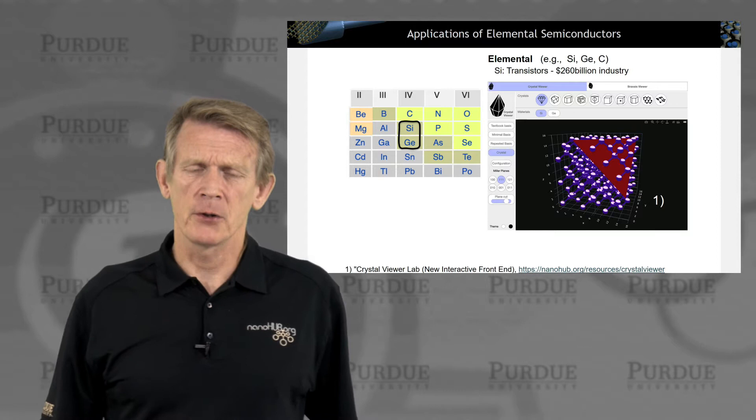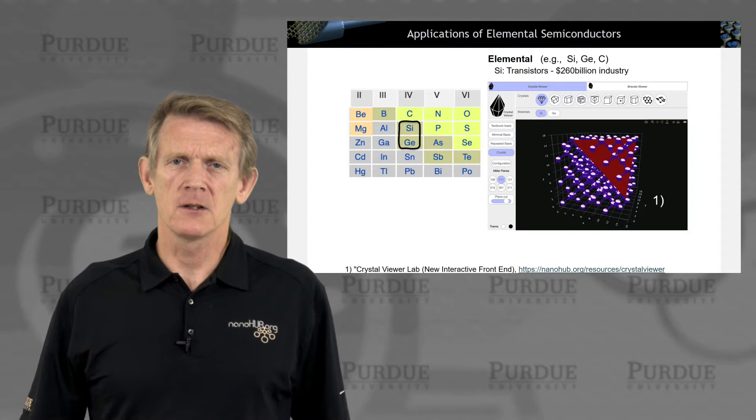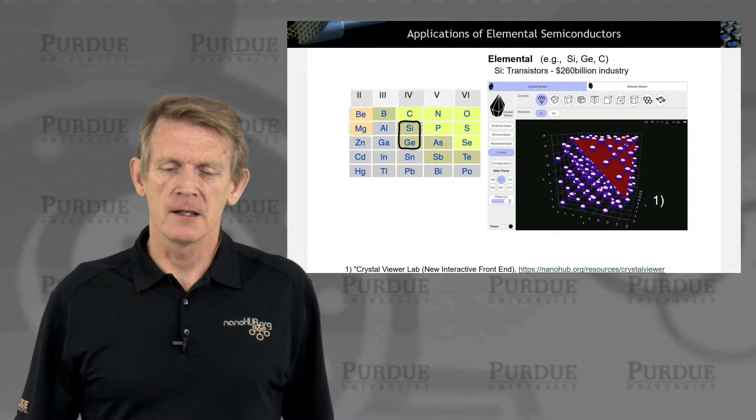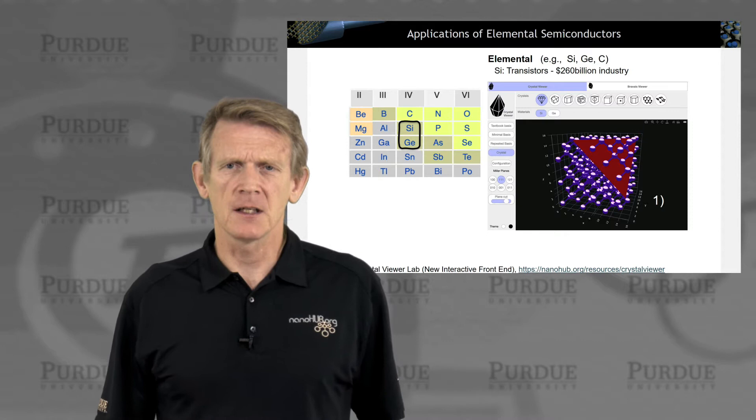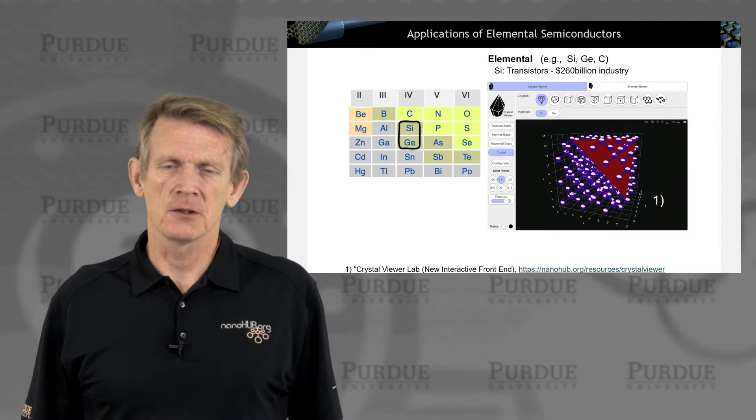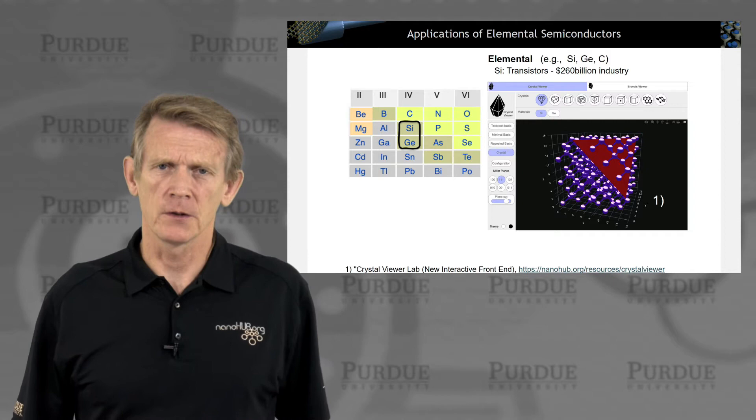Silicon is certainly the most prominent material being used in the industry — it's literally a $260 billion industry. On the right, you see an image of a silicon crystal generated with the Crystal of Your Lab tool on NanoHub. You'll be doing some exercises with that tool, viewing planes, crystal symmetries, and you can rotate this crystal around into unit cells — all things we'll be talking about in this course.